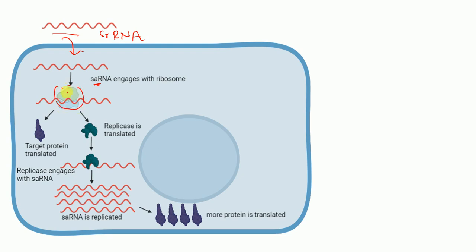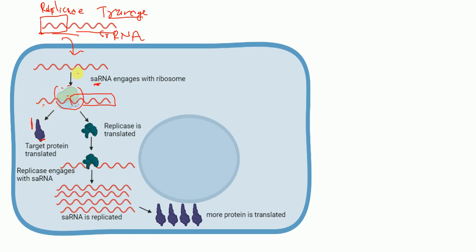This self-amplifying RNA engages with the ribosome. This self-replicating RNA has two parts: one part encodes the replicase machinery, and the other part encodes our transgene or gene of interest. The ribosome translates from the self-replicating RNA — our target protein is translated from one part, and the replicase machinery is also translated from the other part.